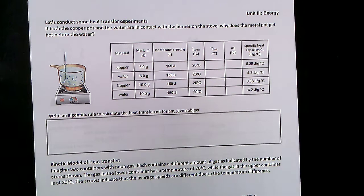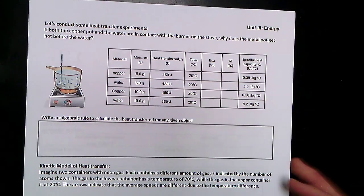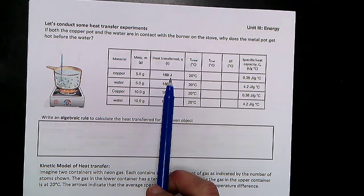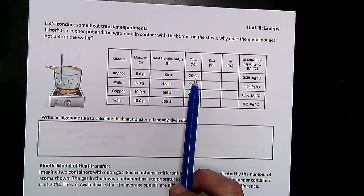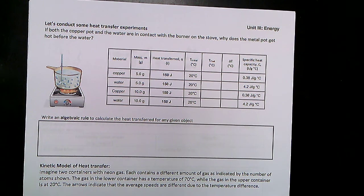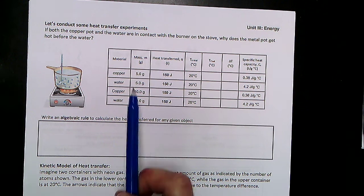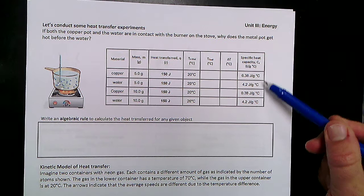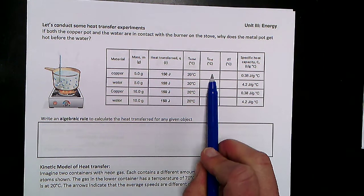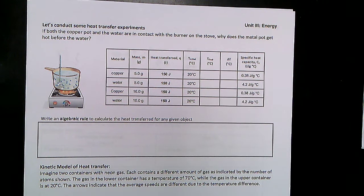If we were in class, we'd conduct a few experiments. The simulation lets you hold fire underneath different materials—I have copper and water here. You can track how much heat you're transferring, the mass of the material, the initial temperature, and the final temperature after putting in, say, 150 joules. Looking at specific heats—0.38 for copper versus 4.2 for water—which do you expect to have a higher final temperature if you put in the same amount of heat?